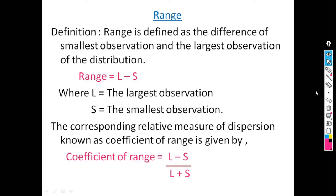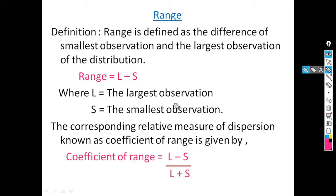The definition of range is: range is defined as the difference of the smallest observation and the largest observation of the distribution. That is, range is equal to L minus S, where L is the largest observation and S is the smallest observation.